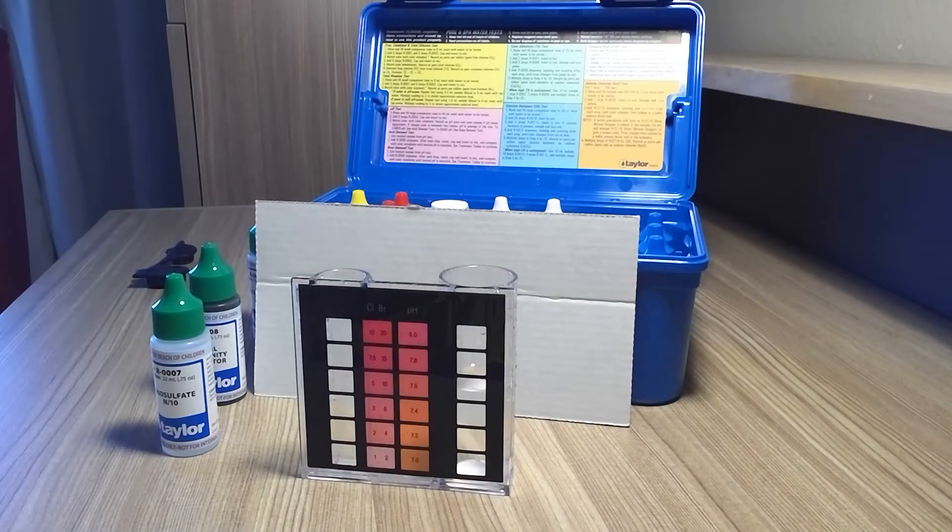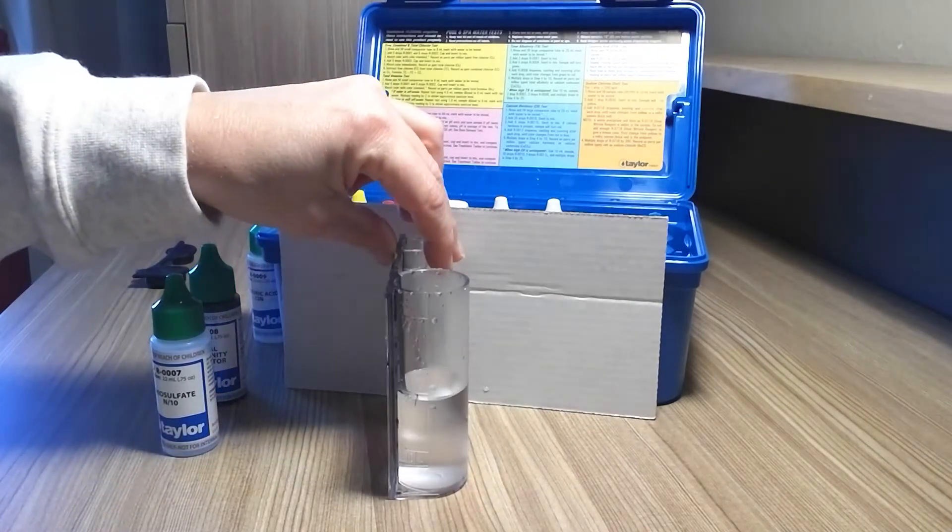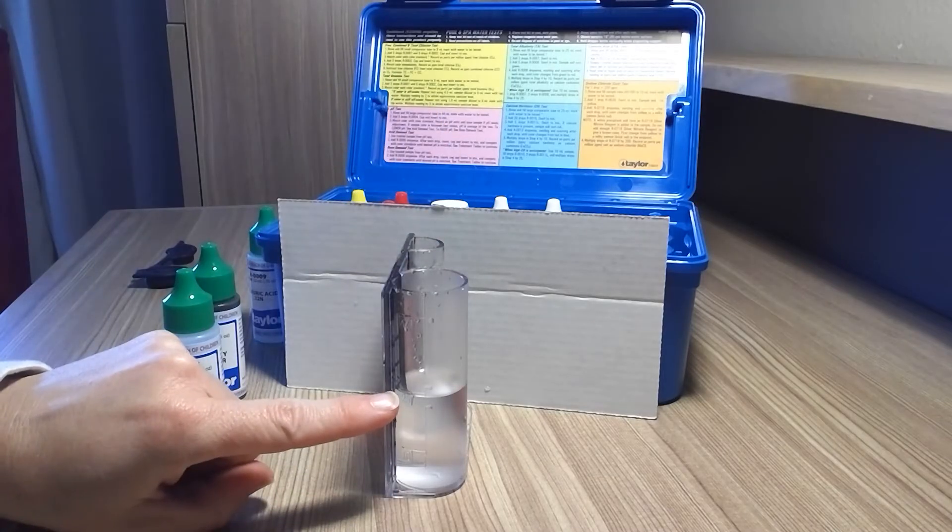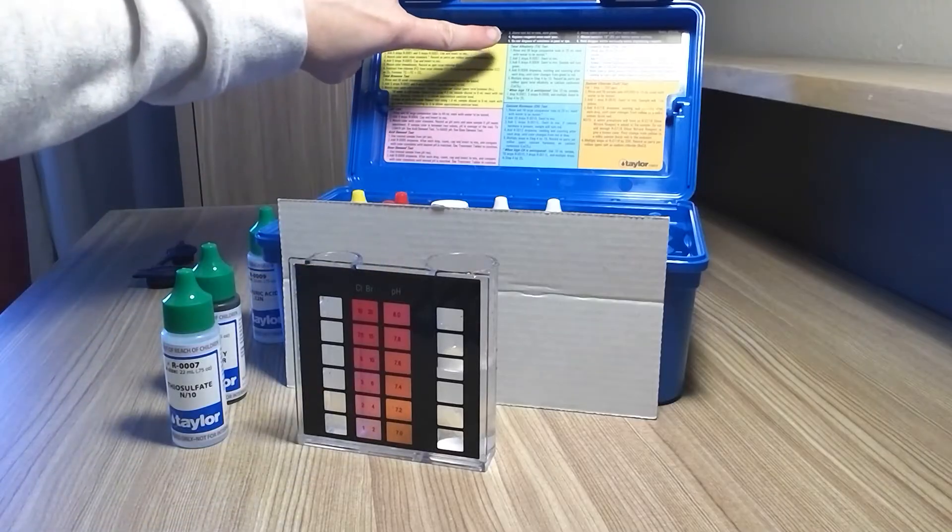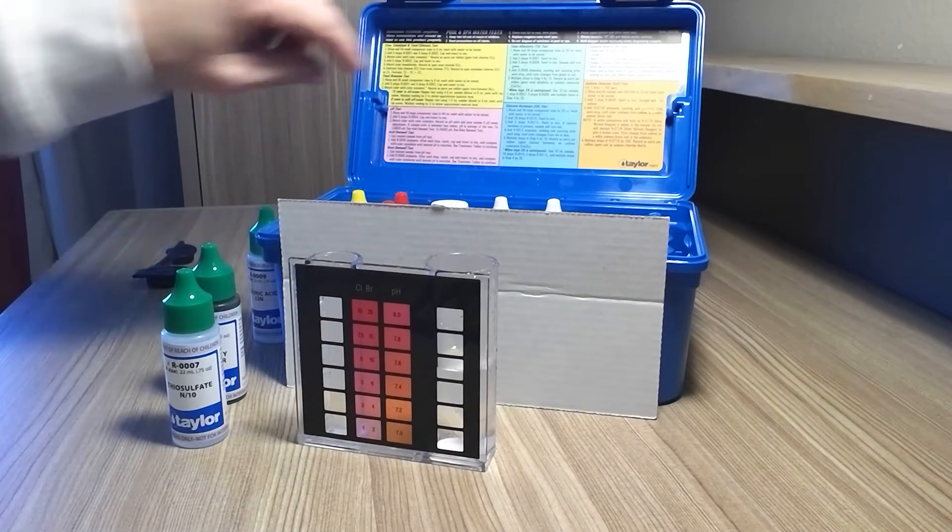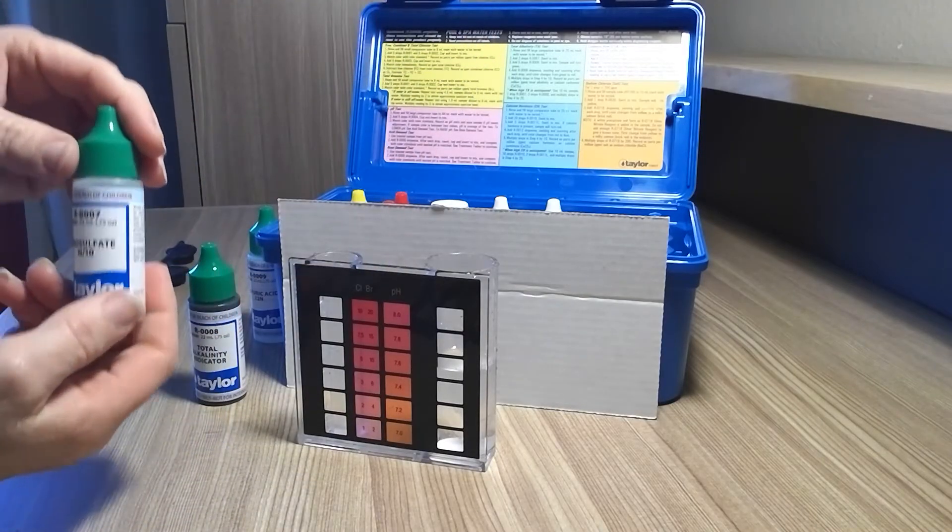Okay, let's go ahead and test for total alkalinity now. For this test you're going to put your water level up to 25 mLs. We're going to follow the green total alkalinity directions on the Taylor test kit.